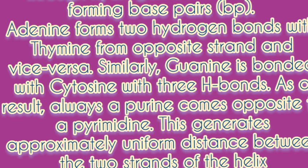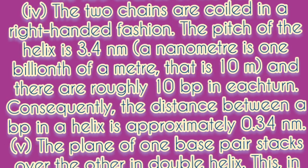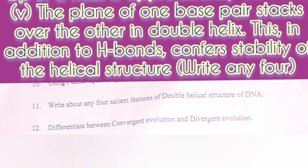Adenine forms two hydrogen bonds with thymine from the opposite strand and vice versa. Similarly, guanine is bonded with cytosine with three hydrogen bonds. As a result, always a purine comes opposite a pyrimidine, generating approximately uniform distance between the two strands of the helix. 4. The two chains are coiled in a right-handed fashion. The pitch of the helix is 3.4 nm and there are roughly 10 base pairs in each turn; consequently, the distance between a base pair in the helix is approximately 0.34 nm. 5. The plane of one base pair stacks over the other in the double helix, which in addition to hydrogen bonds confers stability to the helical structure.